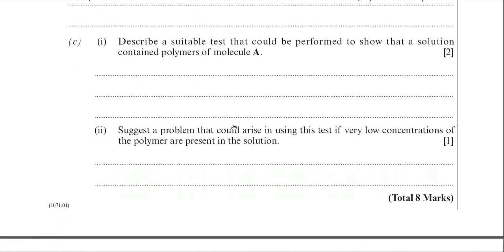So polymers of molecule A, of course, are proteins, and the test for a protein is known as the Biuret test. And the thing to remember with describing tests for biological molecules is to state the colour at the start and the colour change that occurs when the molecule of interest is present.